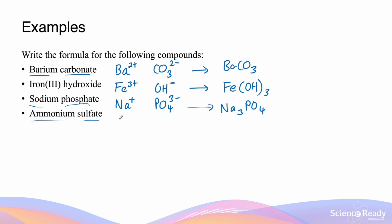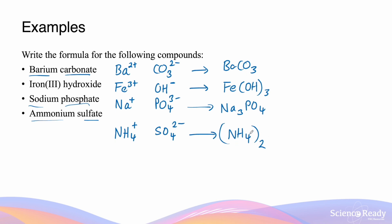Ammonium sulfate contains two polyatomic ions: ammonium, NH4+, and sulfate, SO4 2-. Swapping the charges as subscripts gives (NH4)2SO4. Remember, the subscript 2 applies to the entire ammonium ion, not just the elements inside it. That is the formula for ammonium sulfate.